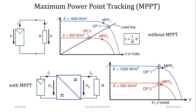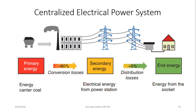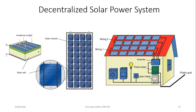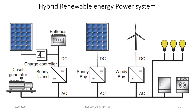Centralized thermal power plants have transmission losses of about 60%, meaning 3 units must be generated for every 1 unit consumed. Decentralized solar PV systems generate and consume locally, eliminating transmission losses. Reducing coal usage directly reduces CO₂ emissions. Solar photovoltaic systems play a very important role in reducing transmission losses and carbon emissions.